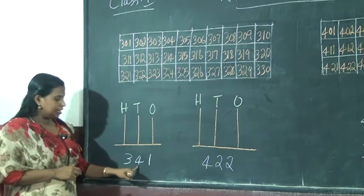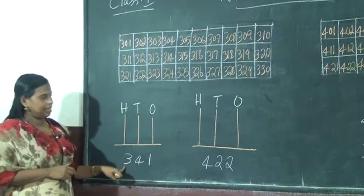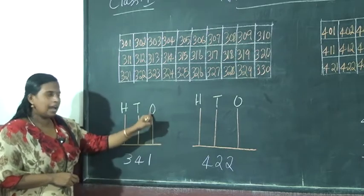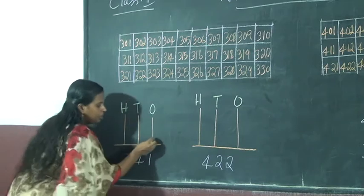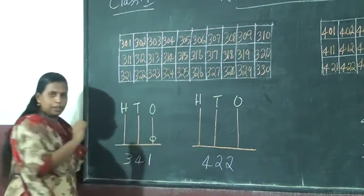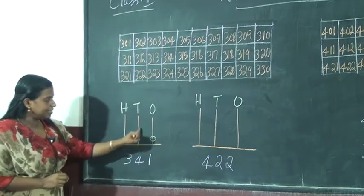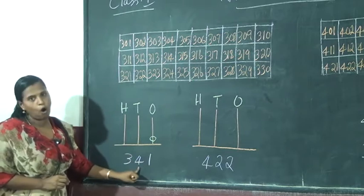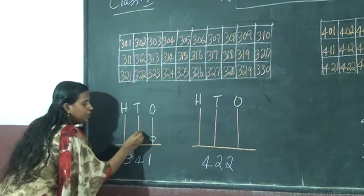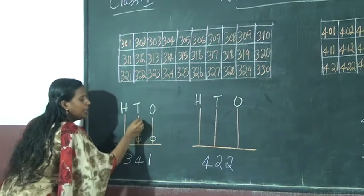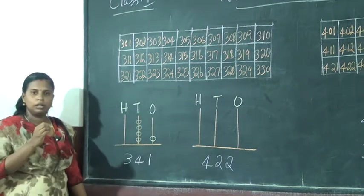Once place, tens place, 100 place. Once place 1. Versi, next tens place 4. Ones, tens place, number 1, 2, 3, 4. Understand? 100 in the place 3, 1, 2, 3. Easy.